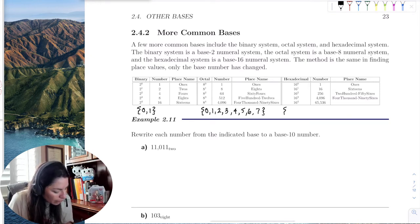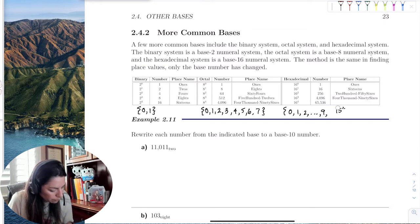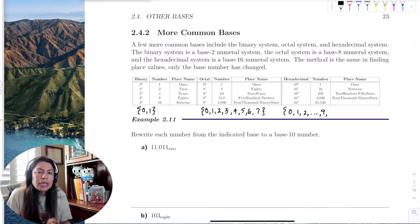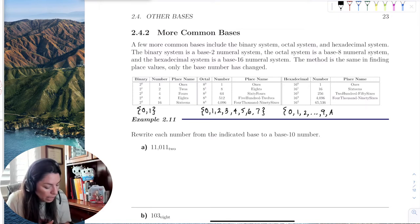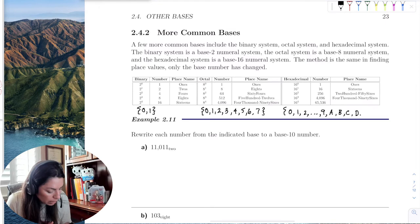Base 16 has 0 through 15. But when it reaches 10, it does not use 10. It starts to use the alpha characters A, B, C, D, E, F.